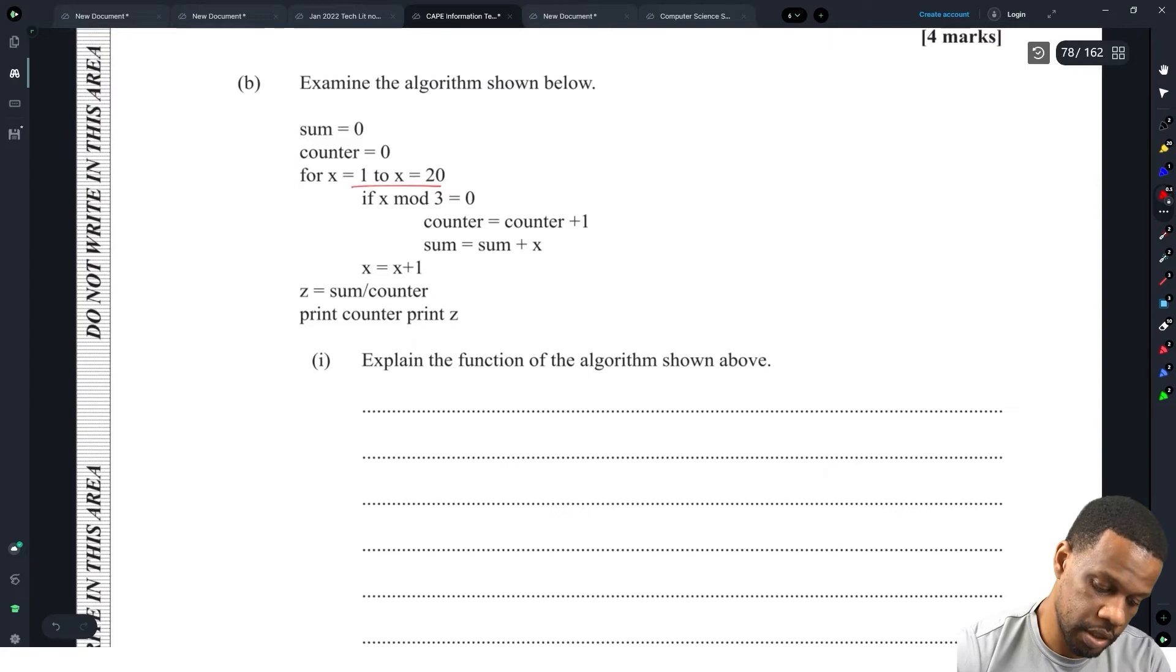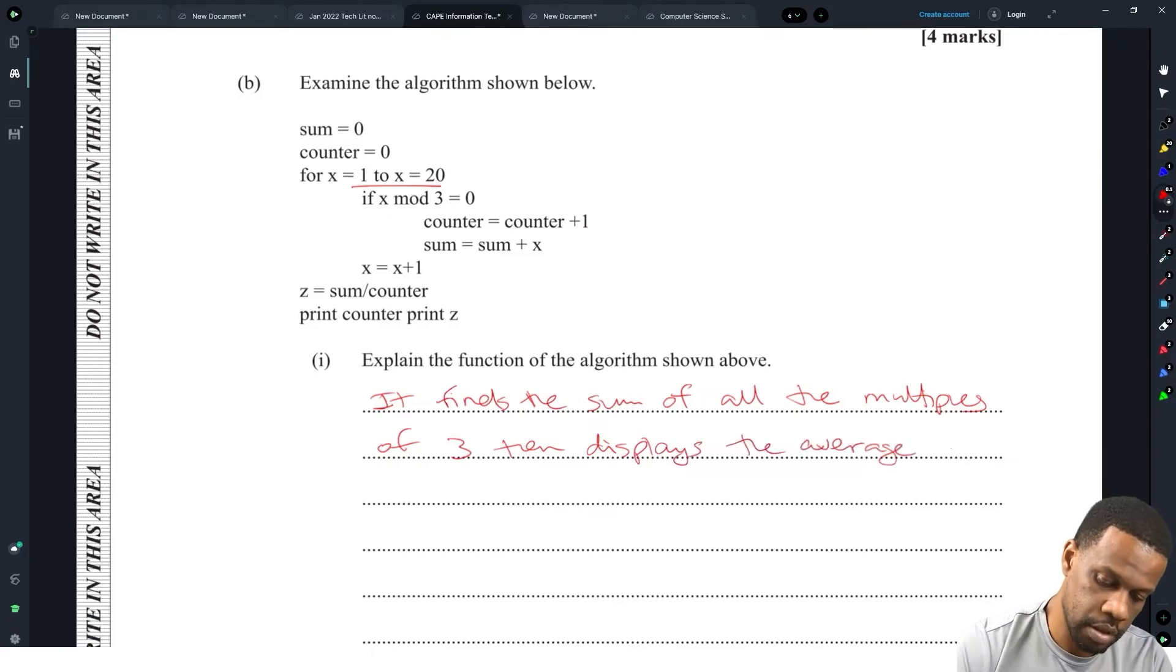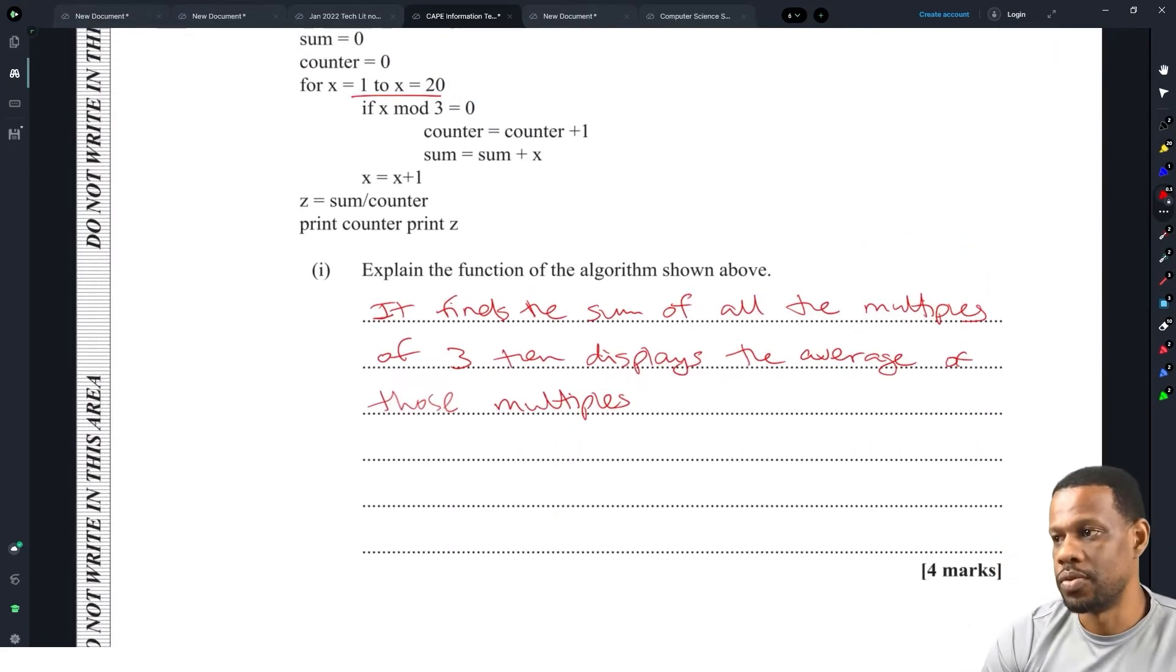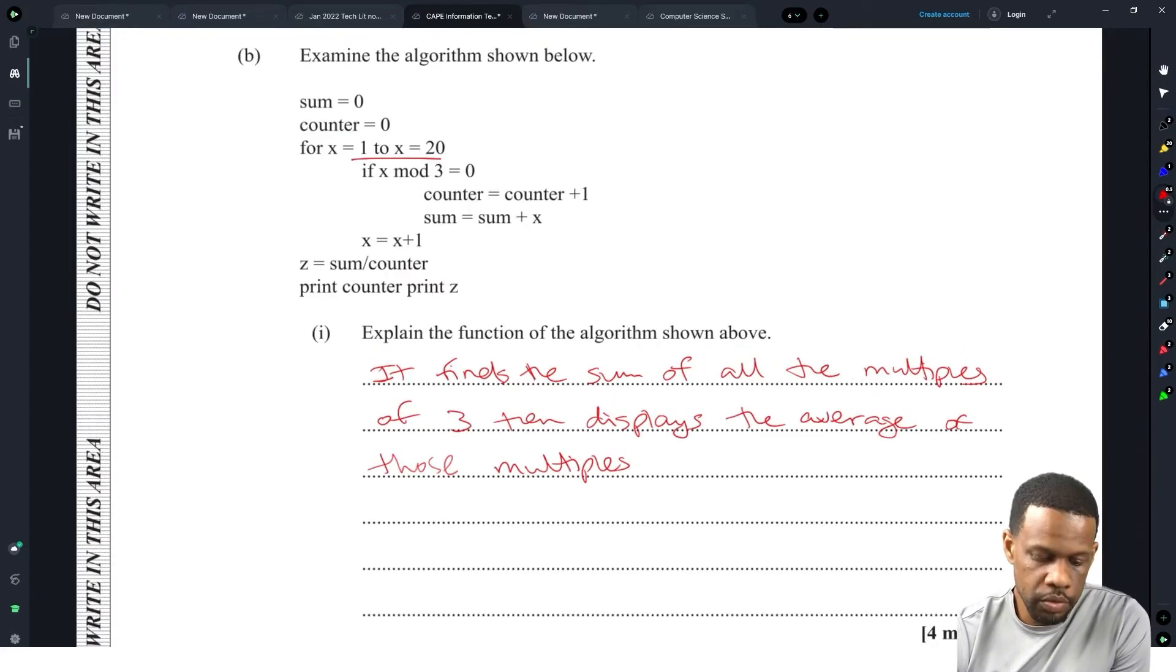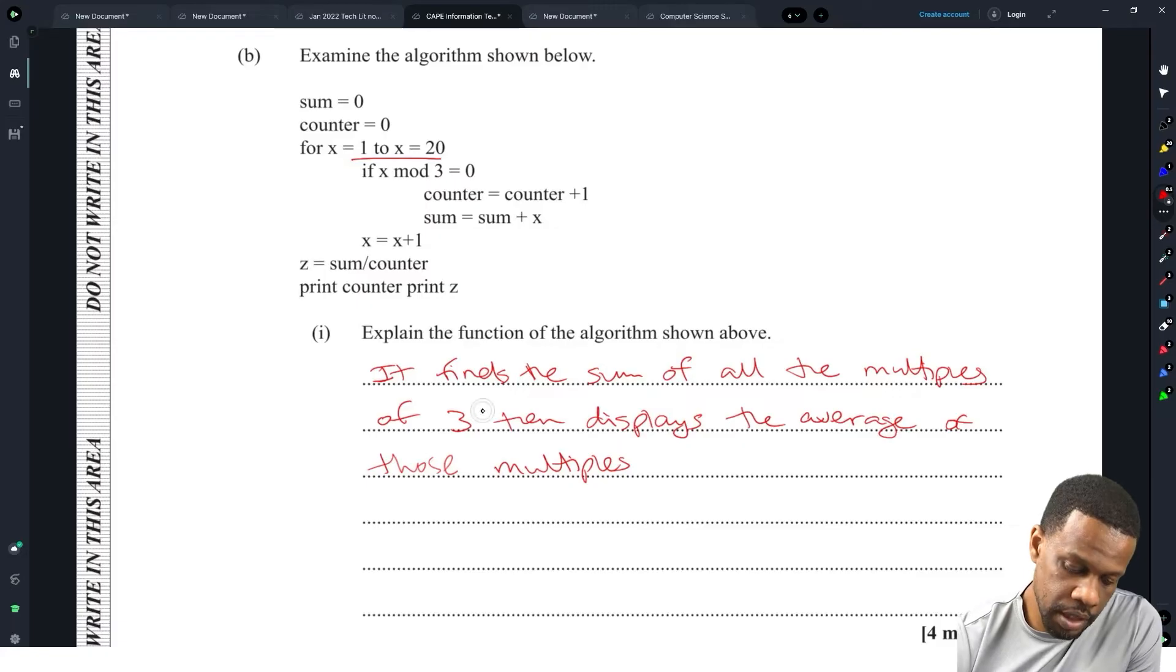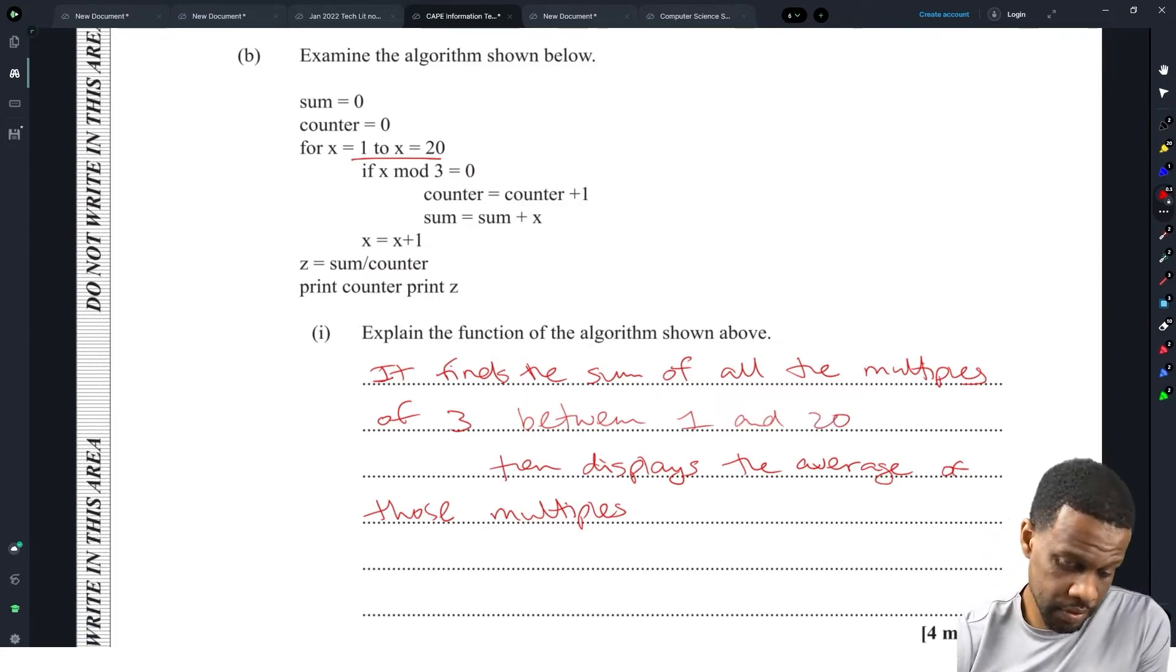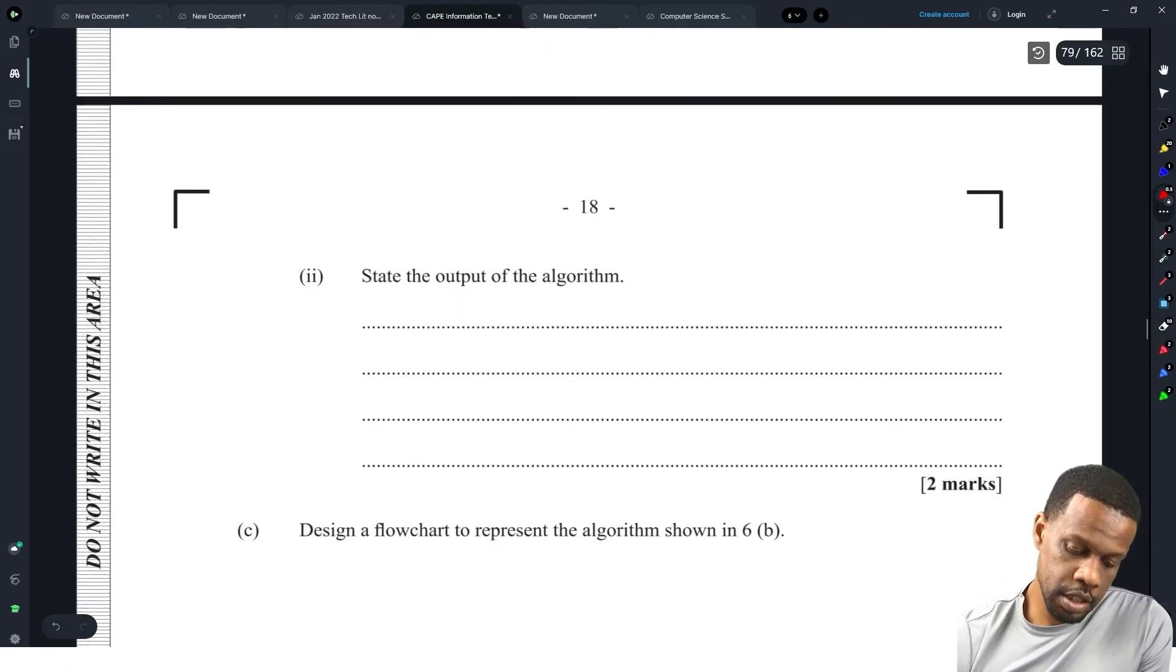Explain the function of the algorithm. It finds the sum of all the multiples of three, then displays the average of those multiples. Find the sum of all the multiples of three between one and twenty inclusive, then displays the average of those multiples. That's probably the four marks that they wanted.